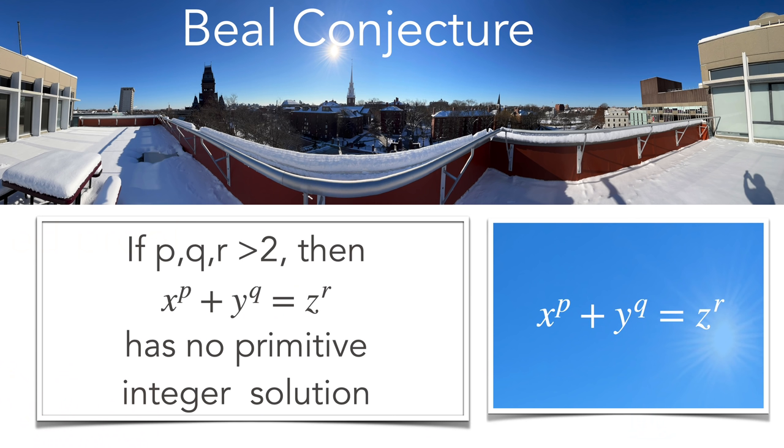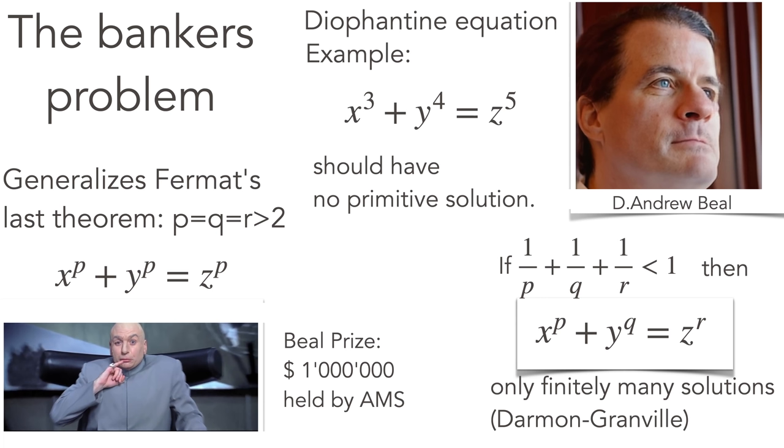The Beal conjecture deals with the Diophantine equation similarly to the Fermat last theorem equation and asks that x to the p plus y to the q is equal to z to the r has no primitive integer solution. Makes sense from probabilistic considerations.